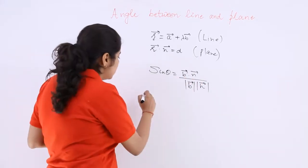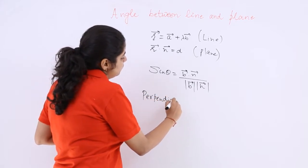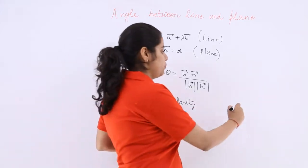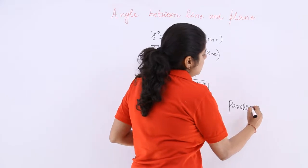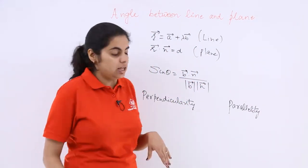The other thing, what is the condition of perpendicularity and what is the condition of parallelity? For parallelity the theta should be 0, for perpendicularity theta should be 90 degrees.